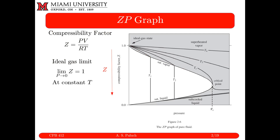Where we ended our last set of notes was looking at the Z versus P phase diagram — the compressibility phase diagram. From Thermo-1, you should have been introduced to the equation of state for real fluids: PV = ZRT. Z is our compressibility and accounts for deviations from ideal gas behavior. In the limit that Z goes to 1, we recover the ideal gas equation of state. In the limit that P goes to 0 or V goes to infinity, Z goes to 1.